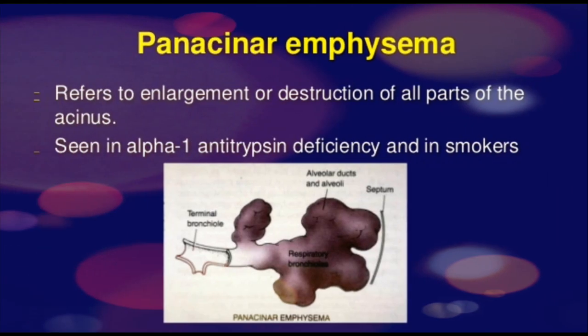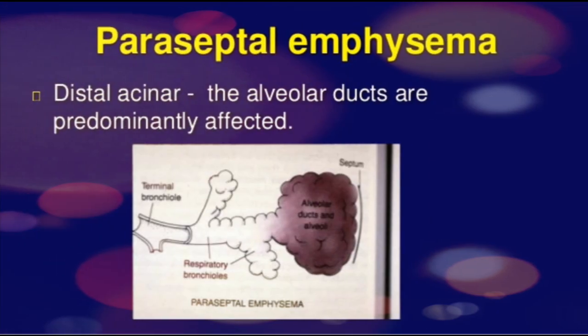The next type is panacinar emphysema — pan means whole and acinar means acinus — so it refers to the enlargement or destruction of all parts of the acinus including respiratory bronchioles, alveolar sacs, alveolar ducts and alveoli. It is commonly present in patients with alpha-1 antitrypsin deficiency. The last type is distal acinar emphysema, also known as paraseptal emphysema, where the distal acinar parts — alveolar ducts and alveoli — are present just next to the septum, whereas respiratory bronchioles are usually spared.